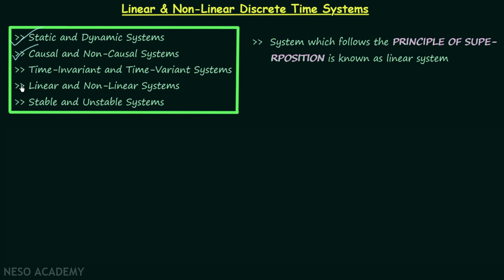In the last lecture we had a discussion on time-invariant and time-variant discrete time systems. In this lecture we will understand how to find if a given discrete time system is a linear system or non-linear system. A system which follows the principle of superposition is known as a linear system. The principle of superposition is composed of two laws.